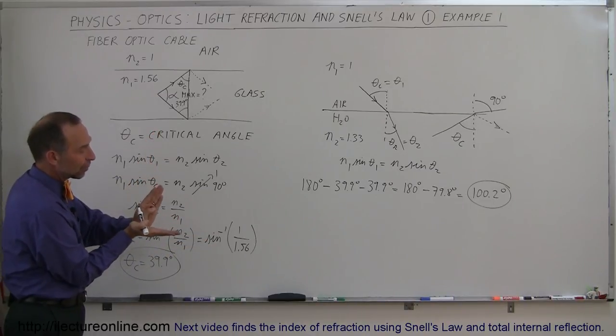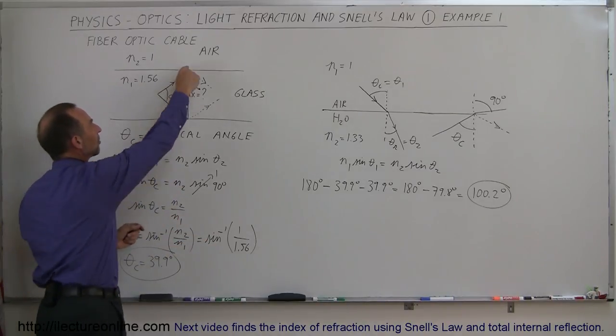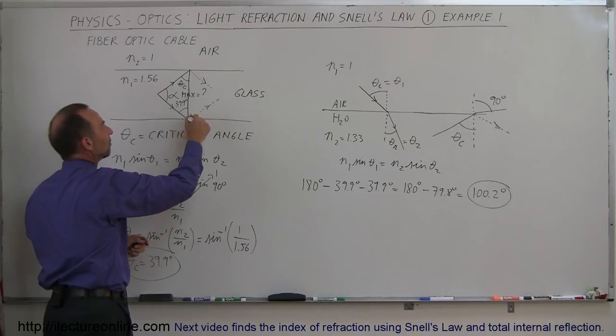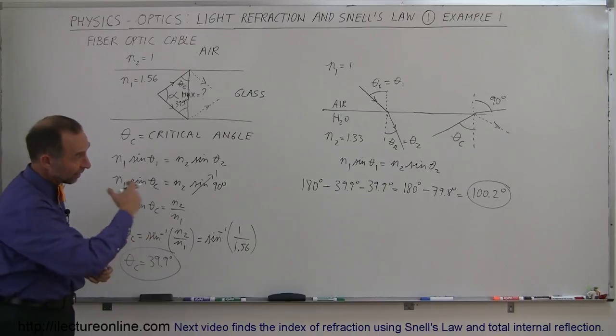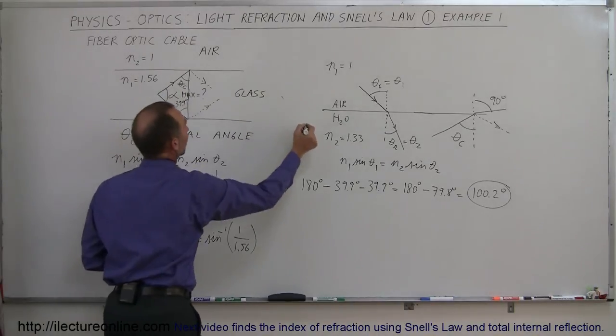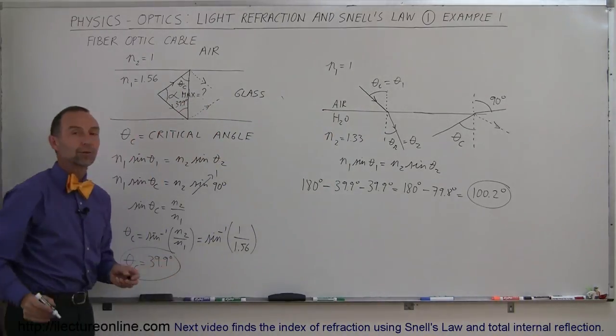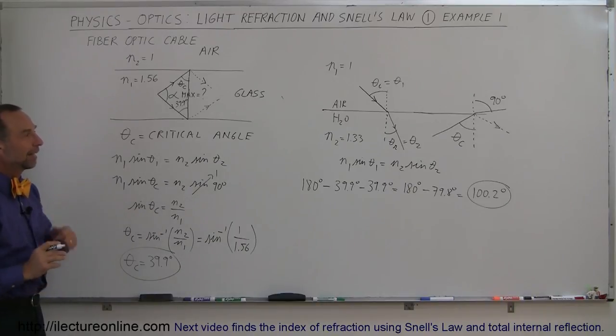If that angle becomes any larger, the beams will not stay inside a fiber optic cable, they'll actually leave a fiber optic cable, and the transmission will no longer continue. As long as the angle is less than that, the rays will just continue to bounce back and forth, all the way through the fiber optic cable. And that's how we do that.